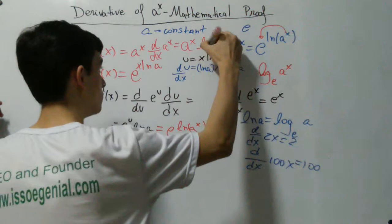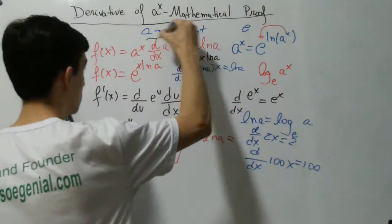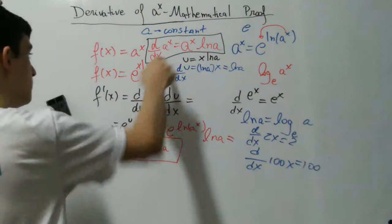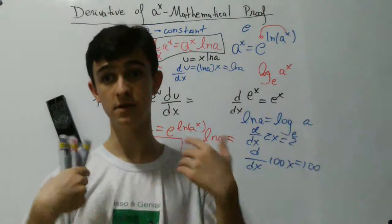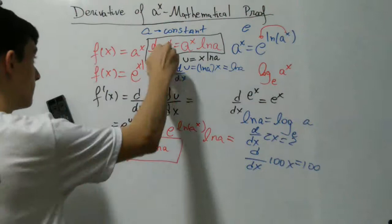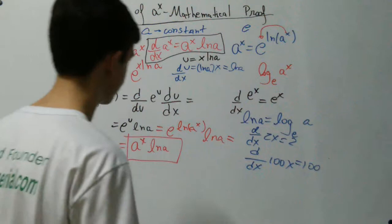And this is the mathematical proof we wanted to make in this video. This is the derivative we are going to need to make the third mathematical proof of the derivative of e to the x. So again, the derivative with respect to x of a to the x is equal to a to the x times natural log of a. Thank you very much for watching and I'll see you in the next videos.